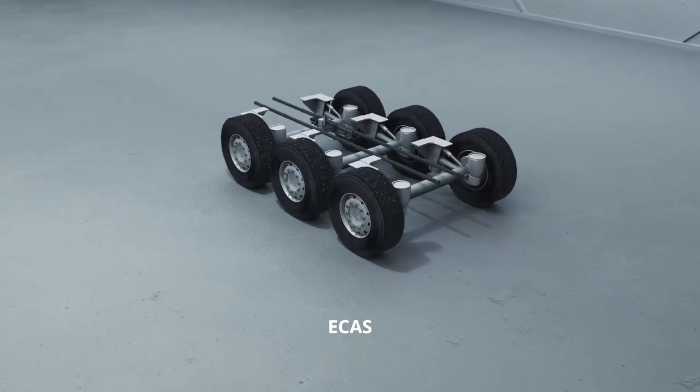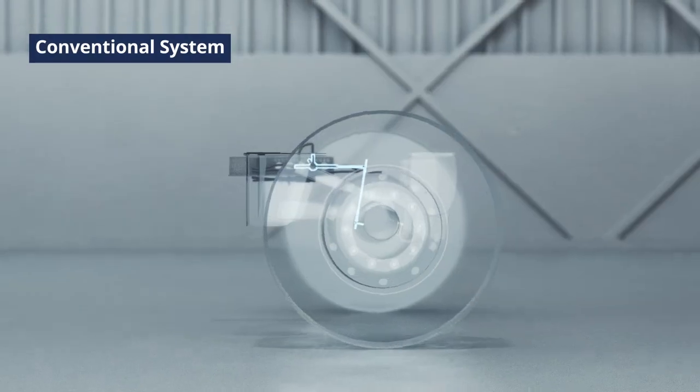ECAS is the next generation of air suspension. But what is it exactly, and why is it better than the old system? Well, easy.